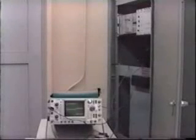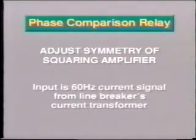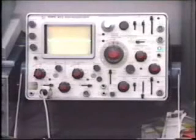Here is another practical example of the oscilloscope: testing a phase comparison relay. The manufacturer's instruction book tells you to adjust the symmetry of a squaring amplifier whose input is a 60 hertz current signal from a line breaker's current transformers. You can obtain the waveform on the scope and adjust the appropriate potentiometer for equal on and off times of 8.33 milliseconds each. A regular multimeter could not give you the necessary picture for such a precise adjustment. The phase comparison relay also needs a propagation delay adjustment to delay the local CT signal to exactly match the CT signal from the line's remote end.